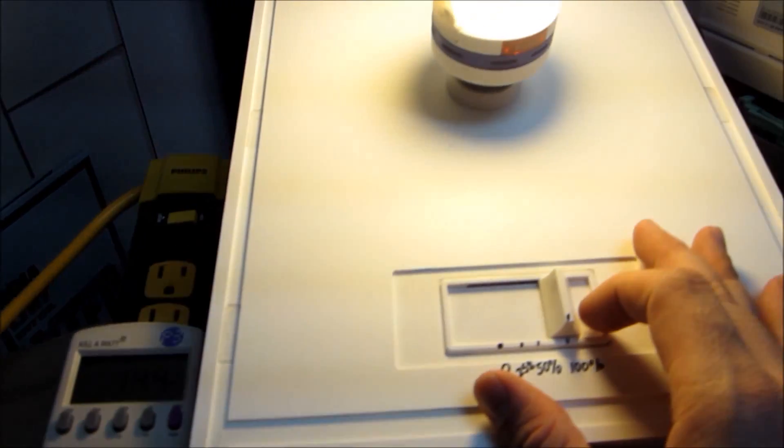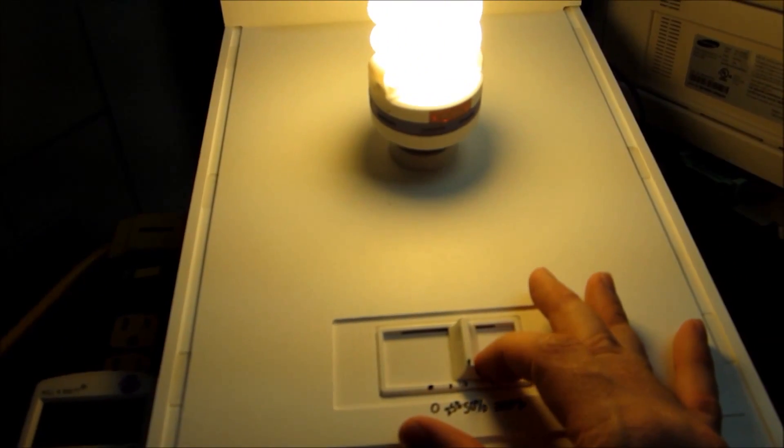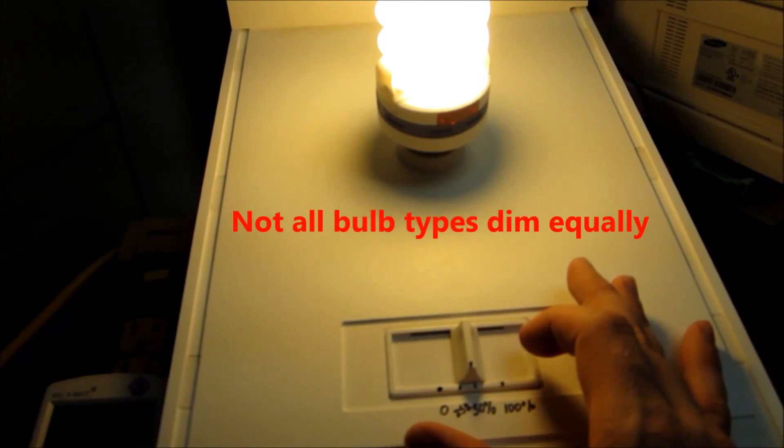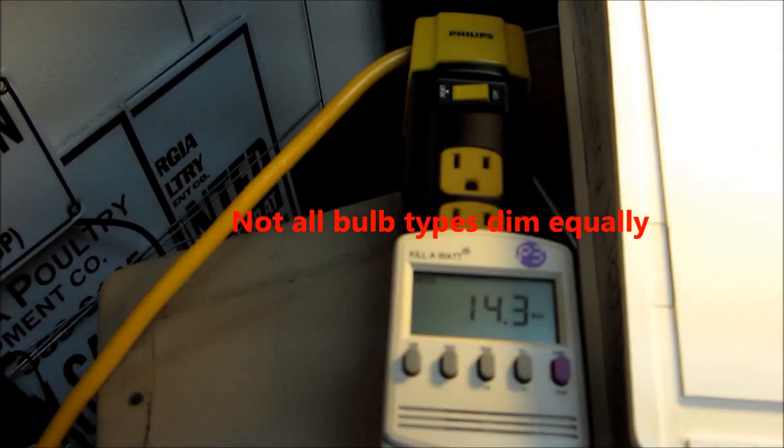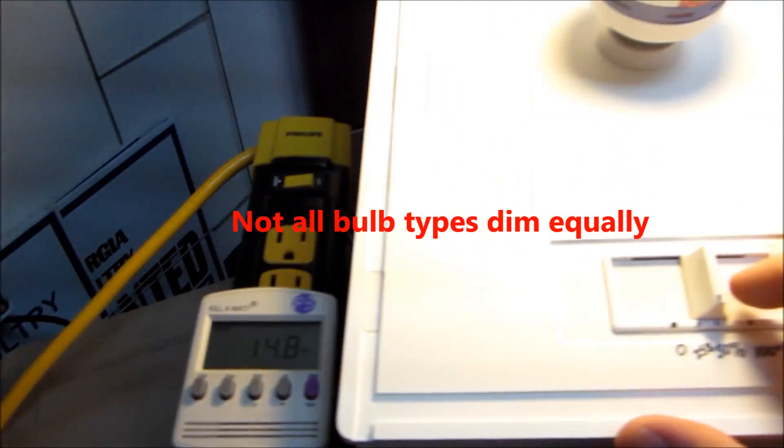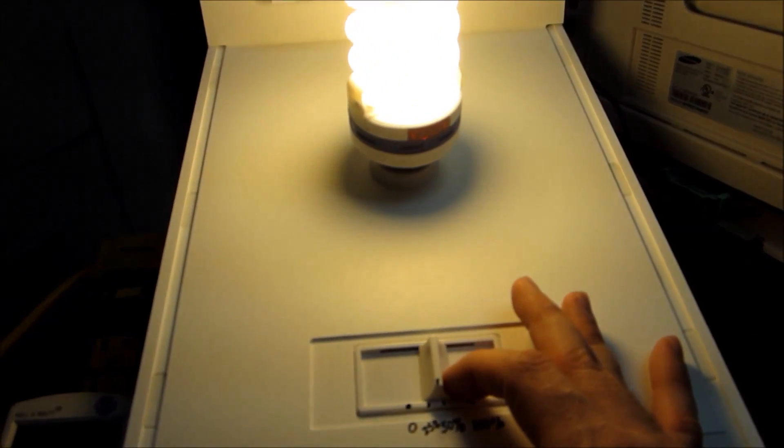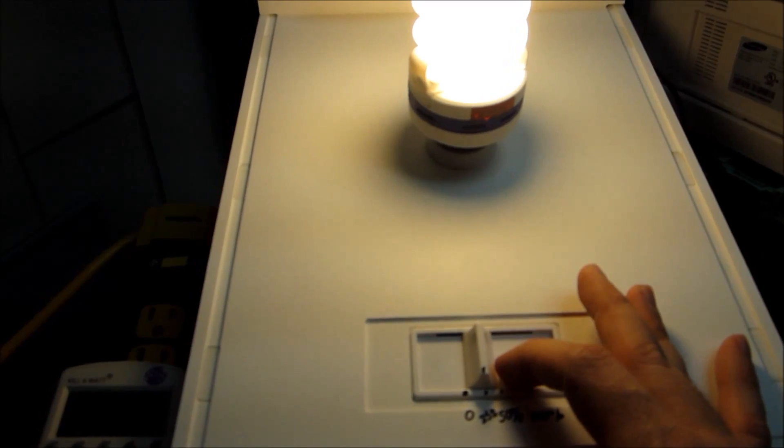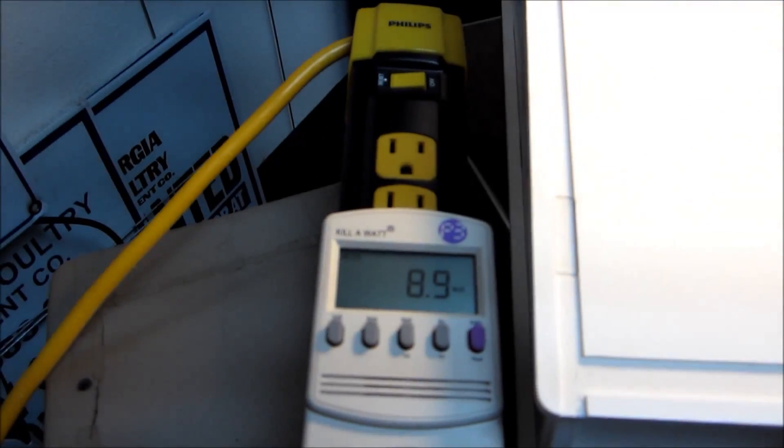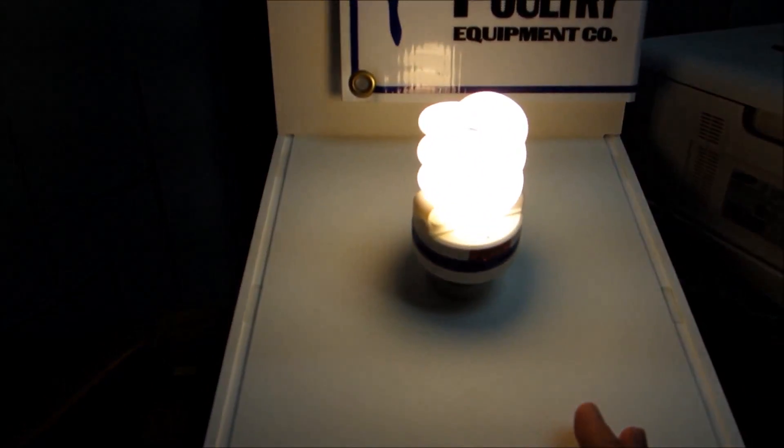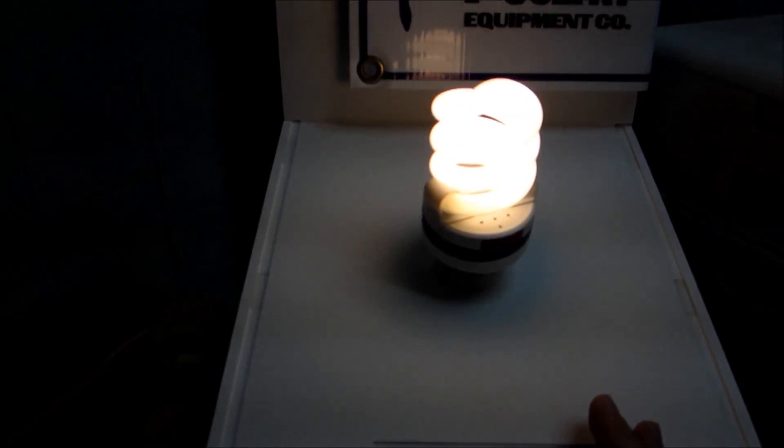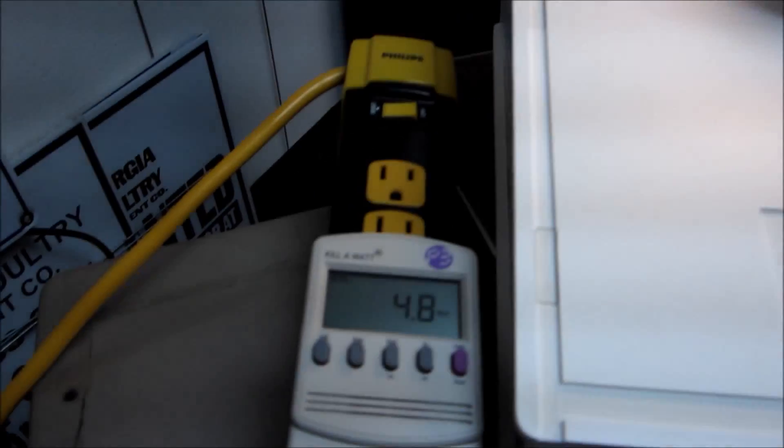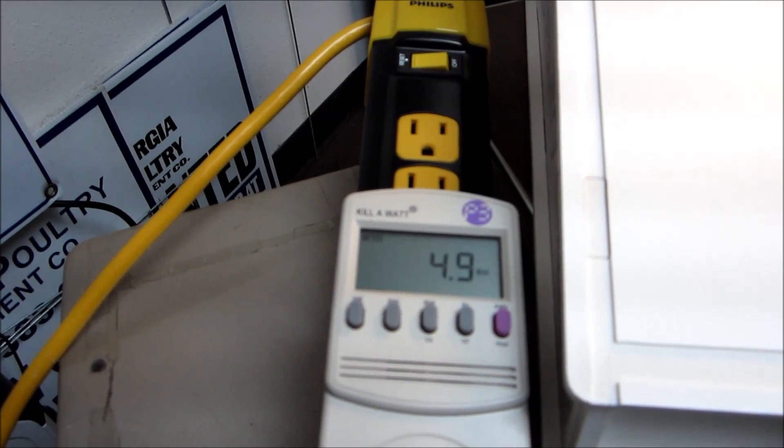Now when you start to dim a CFL in this particular model, you can dim it down to 50% basically and nothing has essentially happened. It is still using the exact same amount of electricity. So if we start to dim it below the 50% mark, that is when you start to see a noticeable decrease in light intensity. Roughly at 25% on this dimmer I am using 9 watts of electricity. And then dim it down to about the 10 to 15% mark and it is using 5 watts of electricity.